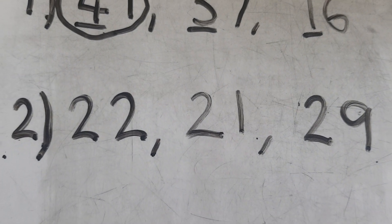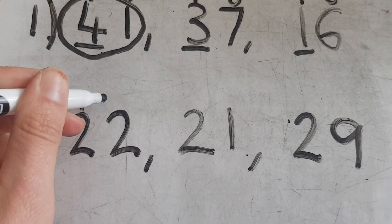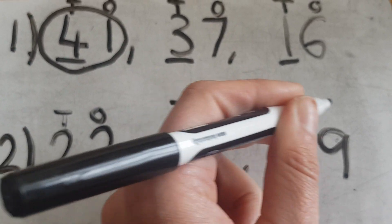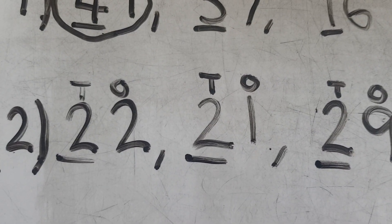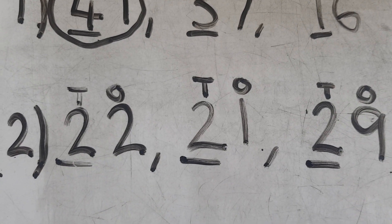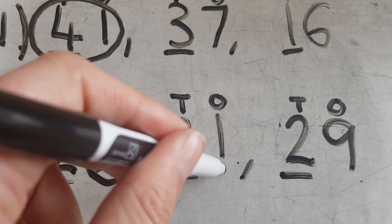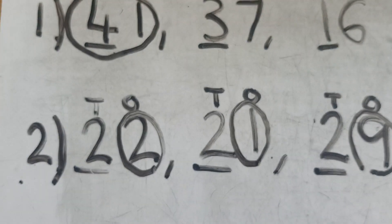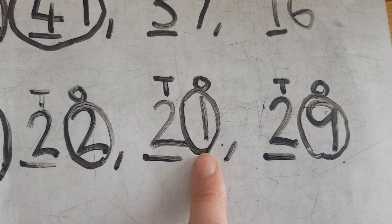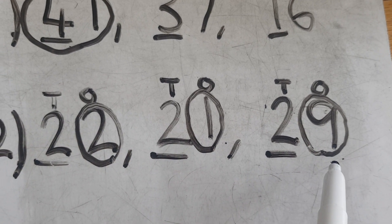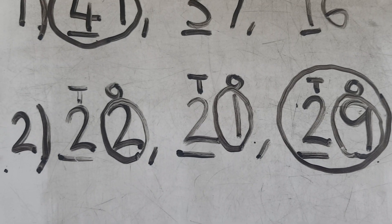Let's have a look at another one. I've got three new numbers for question two: 22, 21 and 29. I'm going to put my tens and ones above. Now all the tens are the same — they're all two tens — so I can't see which one is the biggest, and that's going to be a problem. So what I need to do is move and have a look at the ones instead. The ones are all different: I've got two, one and nine. Nine is the biggest, so 29 is bigger than 21 and 22. I'll circle 29 as my biggest number.